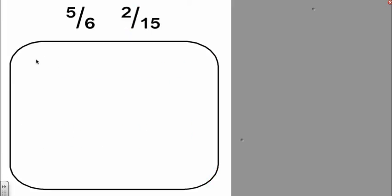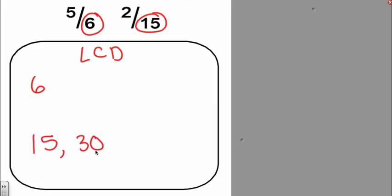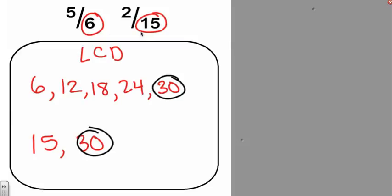Let's try another one. We have 5 sixths and two fifteenths. So I'm just going to first find the least common denominator of 6 and 15. I'm going to start with my larger number and I can stop right away here because I know that 6 can go into 30. So if I go up here and start listing my multiples of 6, I've reached 30. So the denominator that we're going to use for these two fractions is 30.